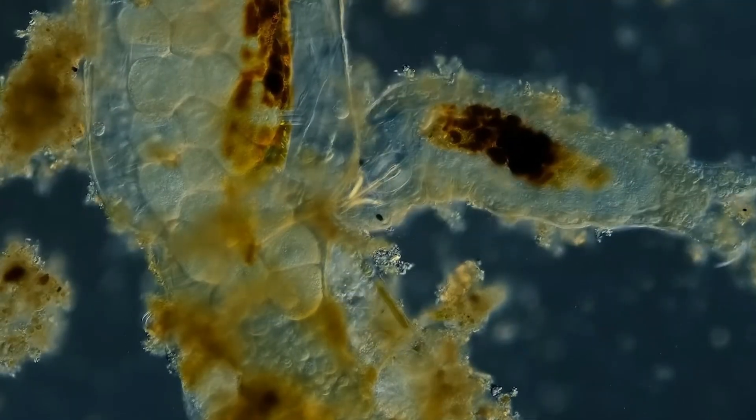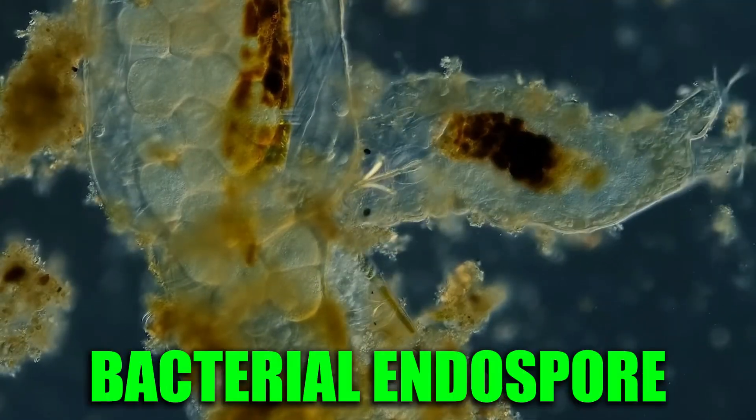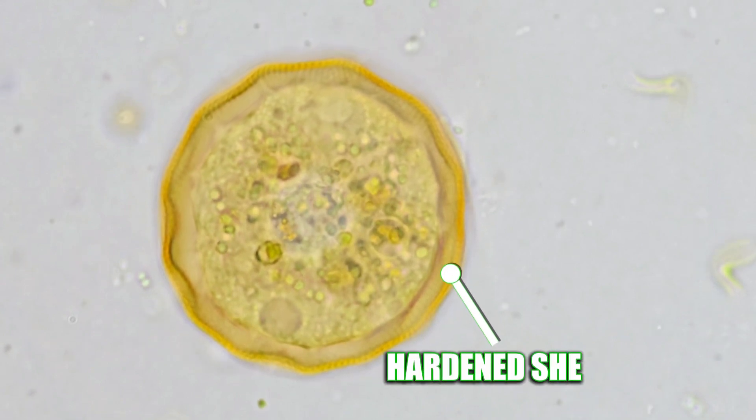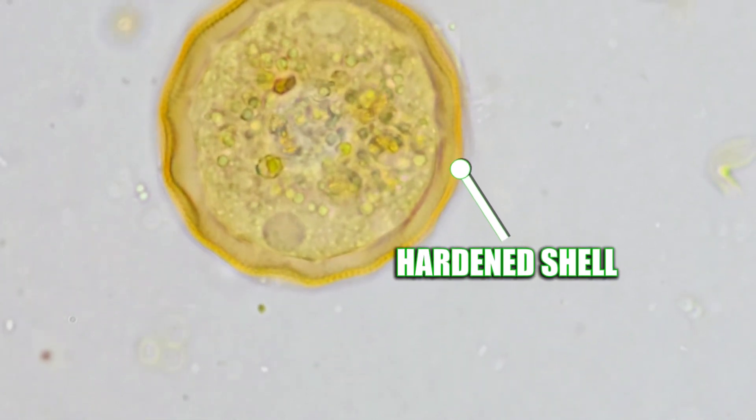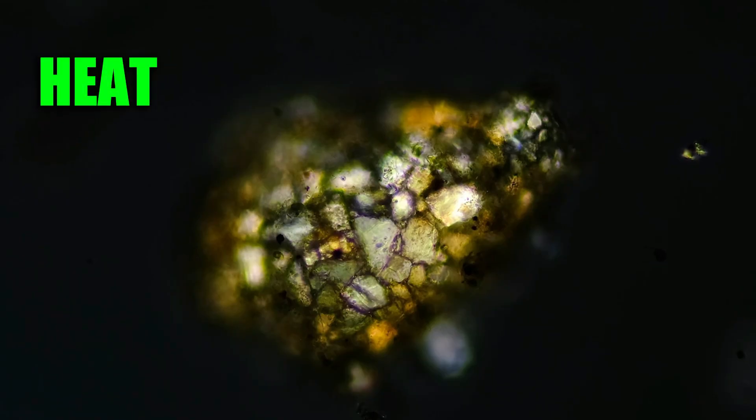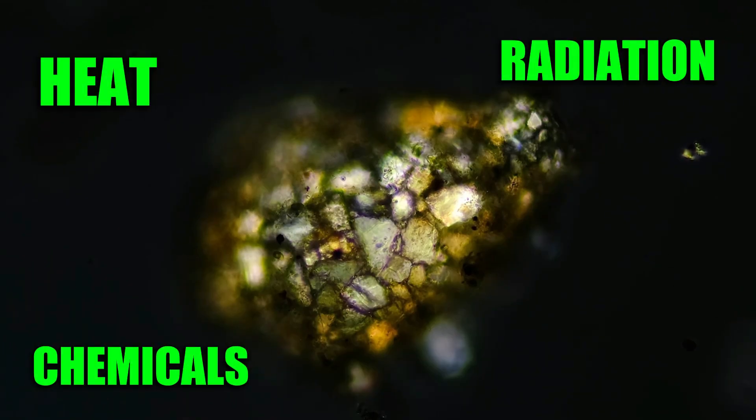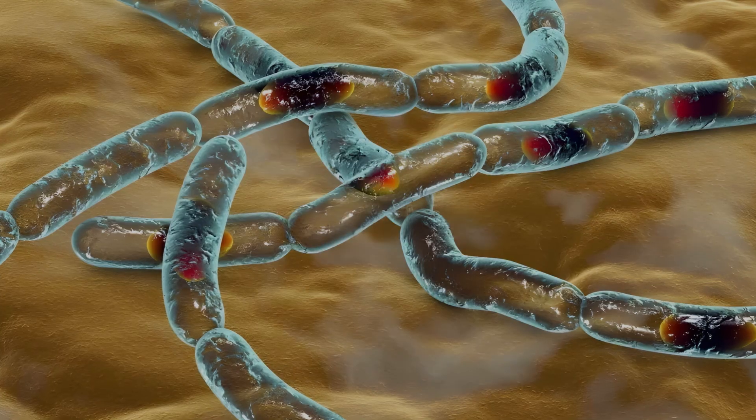One of the most extreme examples is the bacterial endospore. Certain bacteria evolved the ability to create a hardened shell that allows them to shut down and survive under extreme conditions like heat, radiation, chemicals, and even the vacuum of space.